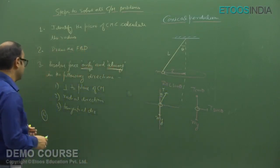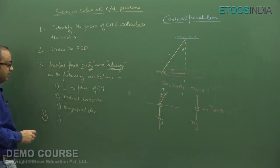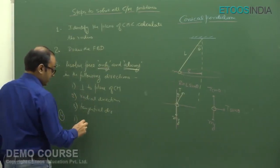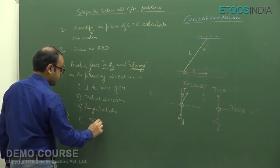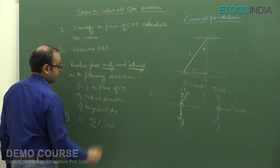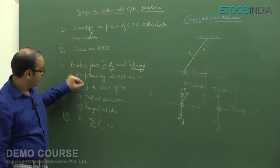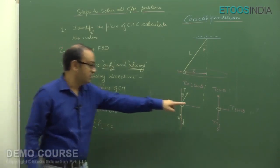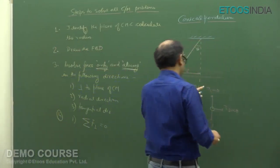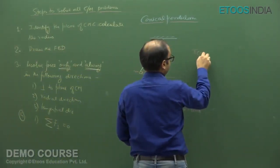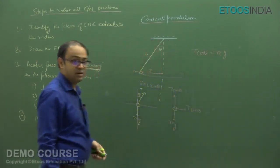So if the particle is moving in the horizontal plane and you find the net force in the vertical direction — that net force should be zero. Therefore, the first part of Step 4 gives us: Σ F_perpendicular = 0, which in this case gives us T cos theta = Mg.